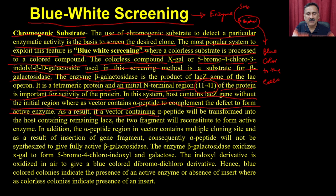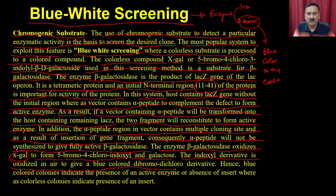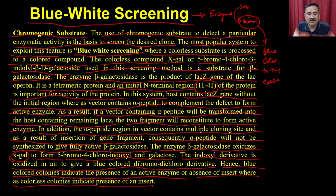As a result, if a vector containing the alpha peptide is transformed into the host containing the remaining lacZ, the two fragments will come together to form the active enzyme. In addition, the alpha peptide region in the vector contains the MCS, and as a result of insertion of a gene fragment, the alpha peptide will not be synthesized to give the fully active beta-galactosidase. The enzyme beta-galactosidase oxidizes X-gal to form 5-bromo-4-chloro-indoxyl and galactose. The indoxyl derivative is oxidized in air to give a blue-colored dibromo-dichloro derivative. Hence, blue-colored colonies indicate the presence of an active enzyme and the absence of insert, whereas colorless colonies indicate the presence of an insert.